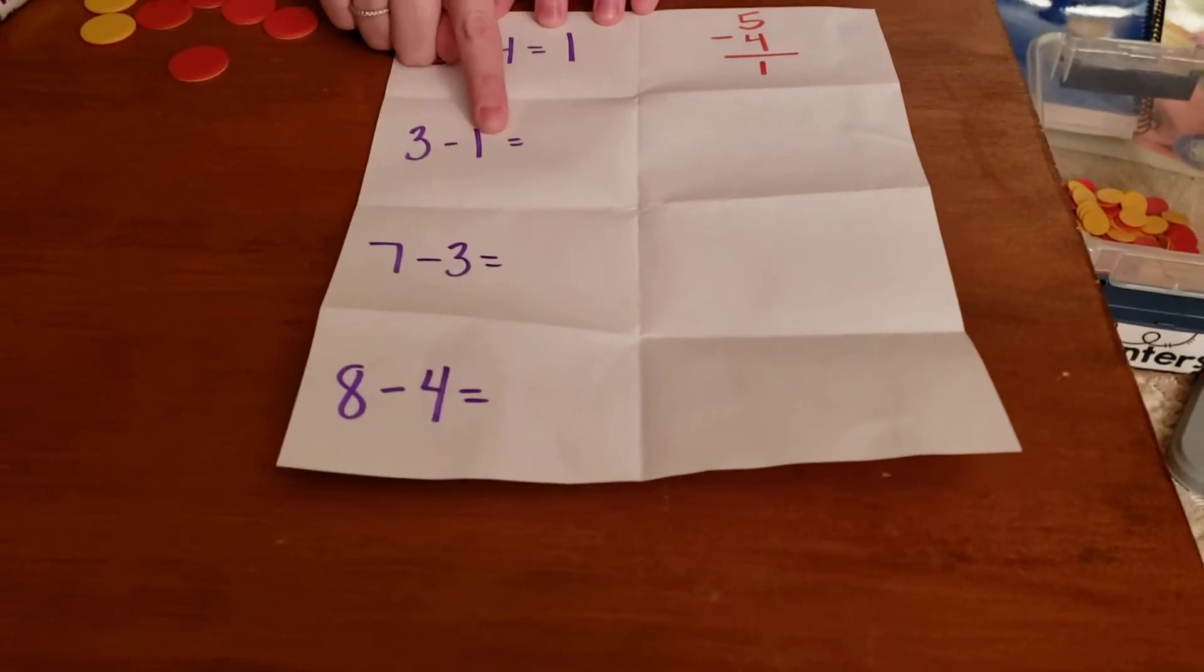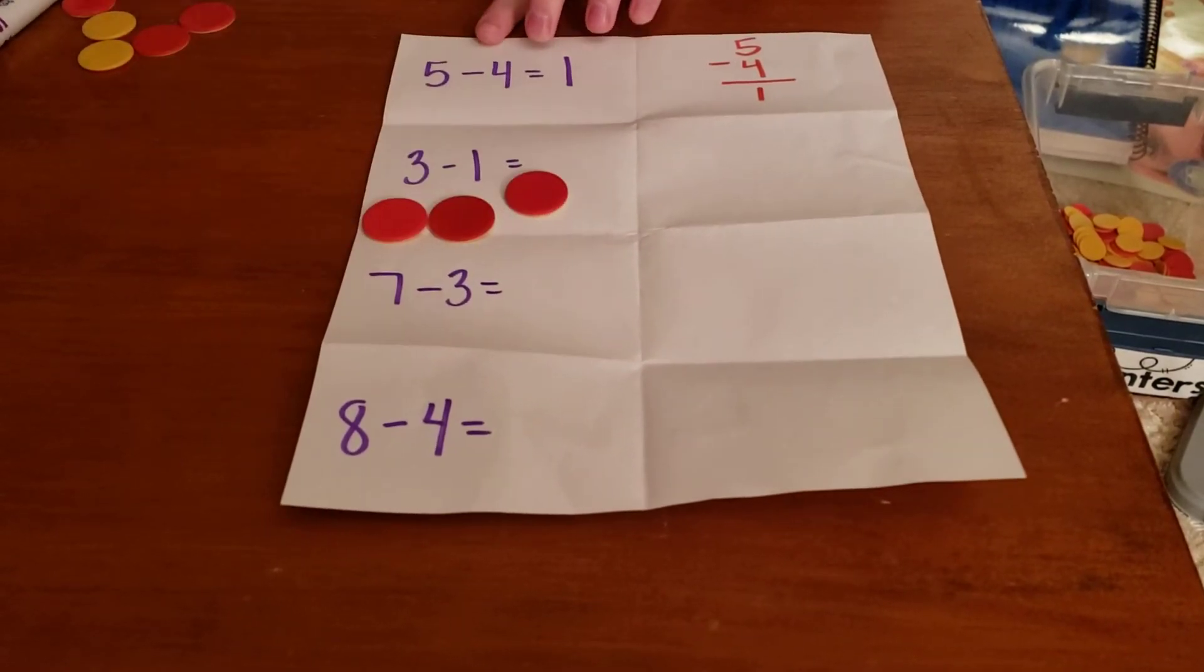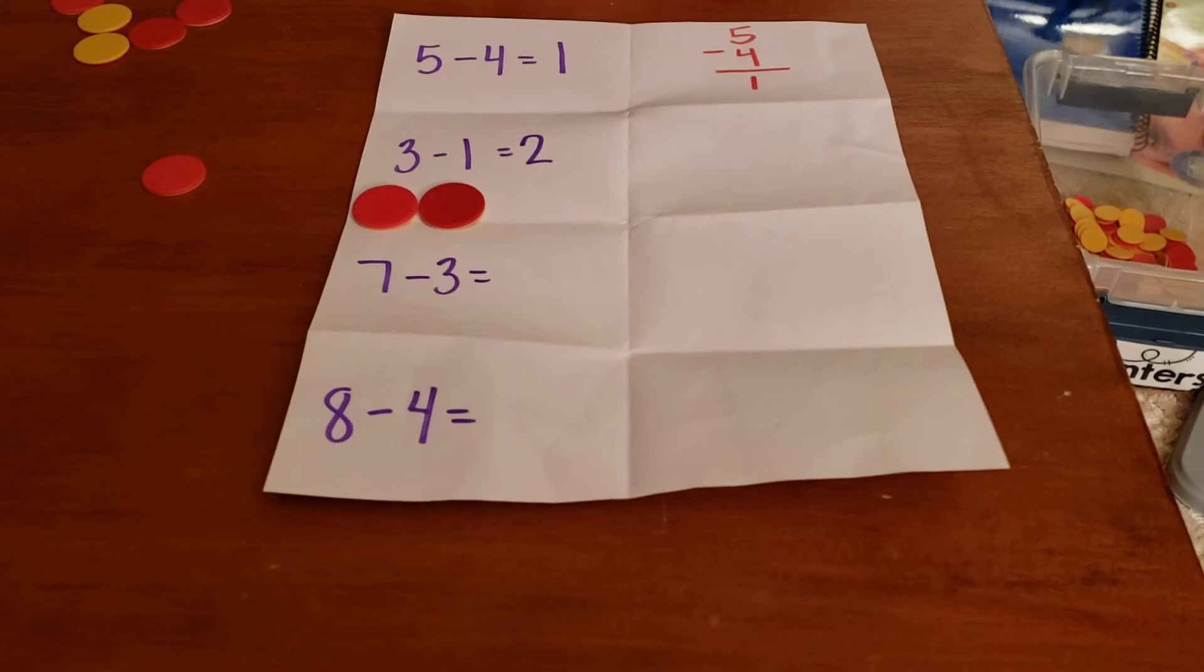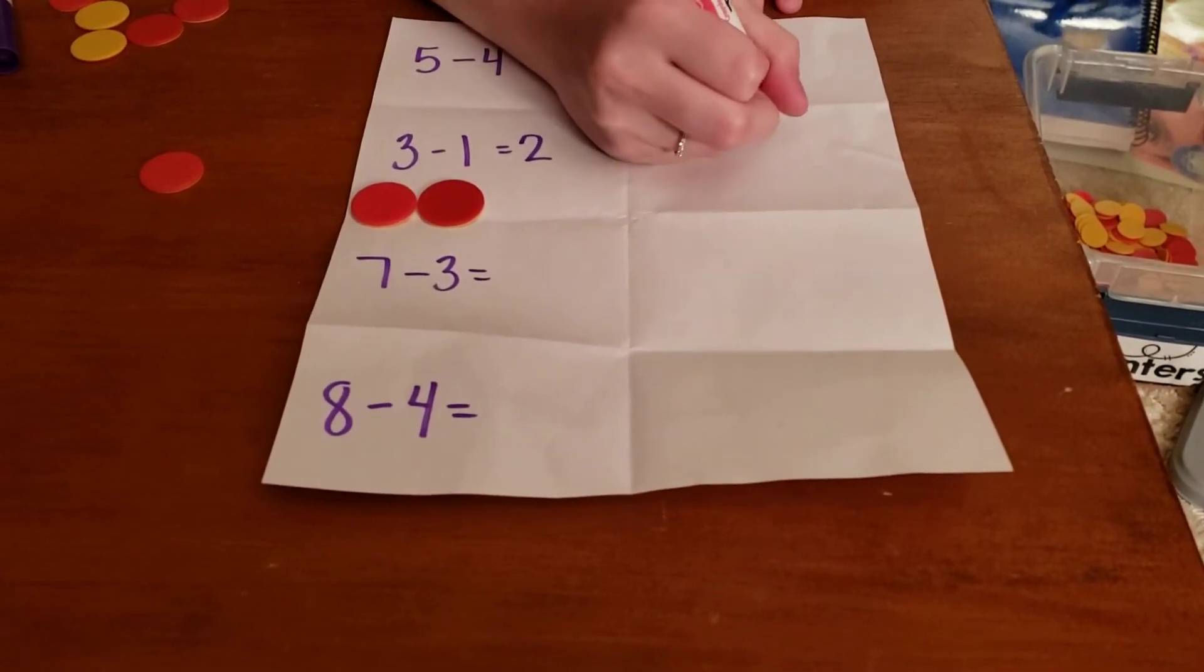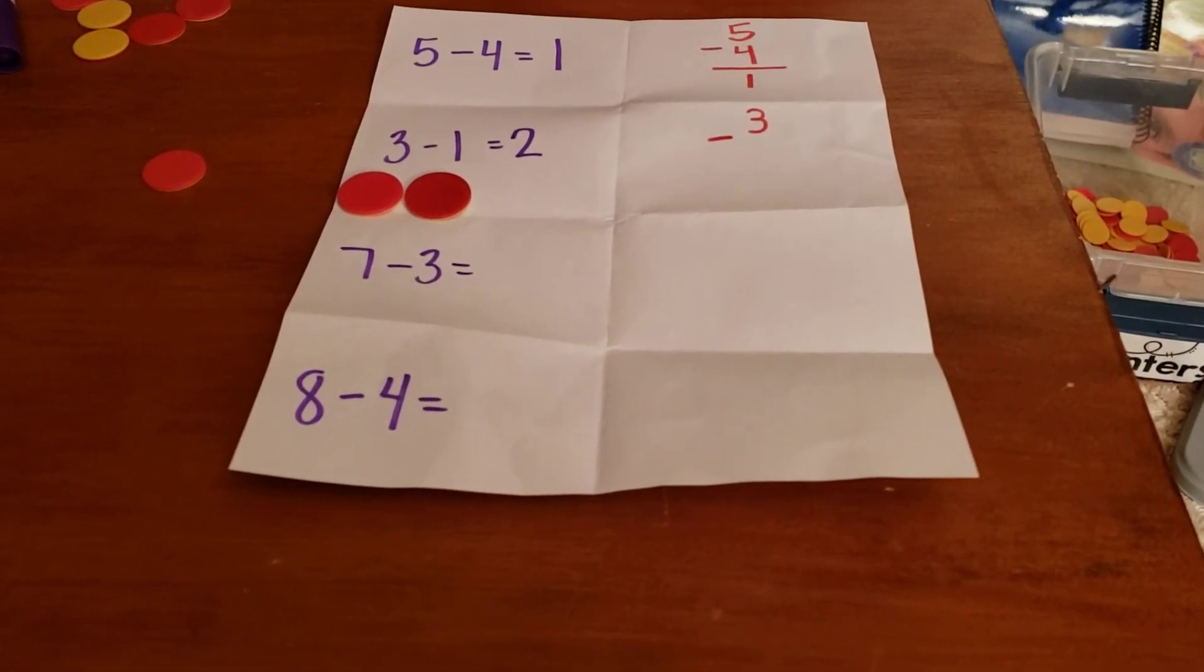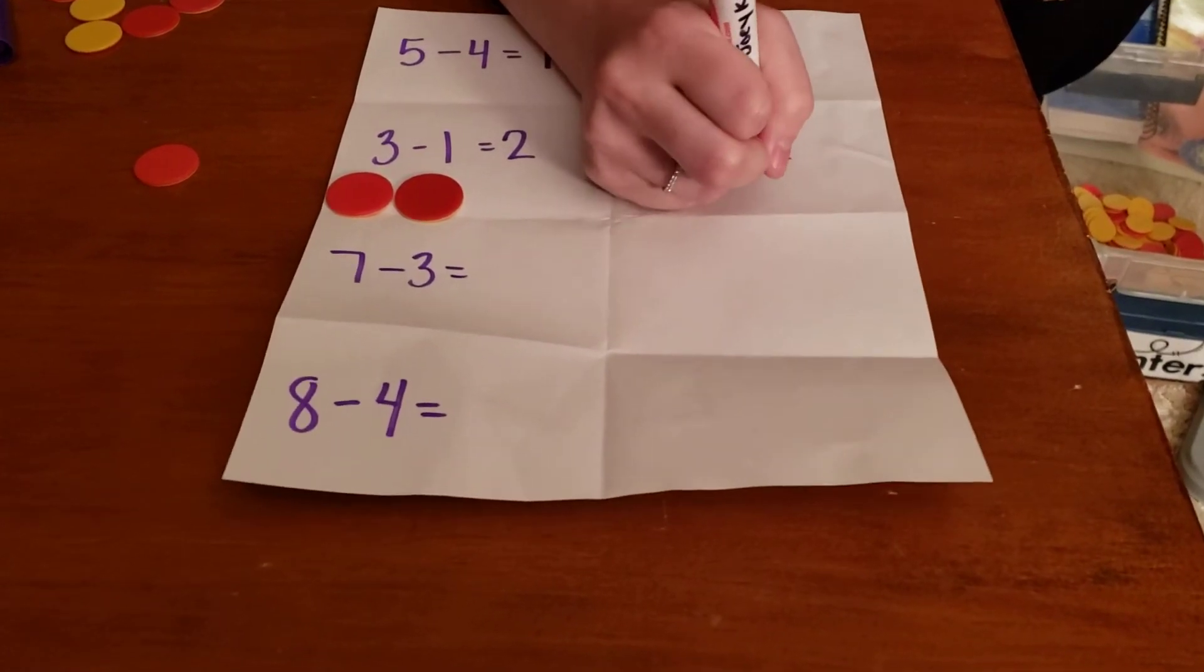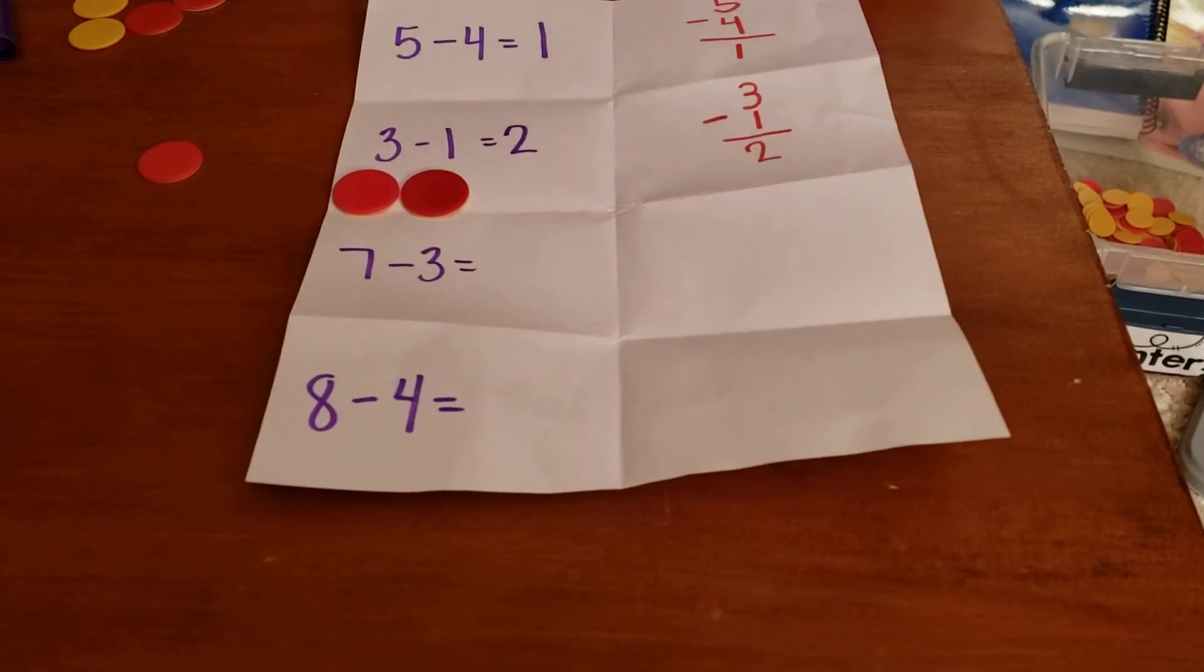All right, next one. Three minus one. Three chips. It says to take away one. How many are left? Two. Okay, now let's write a vertical number sentence. So first I write the three and the minus goes over on the side. That's really important that you scooch it over to the side to make space. Three minus one equals is just that straight line. Two. Three minus one equals two. Good job.